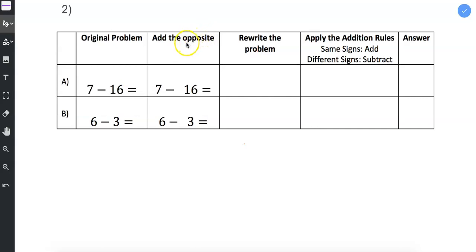To get full credit, make sure you fill in this column, add the opposite, that you rewrite the problem, and you record your answer. If you need to show your work, this is the box where you would show your work.